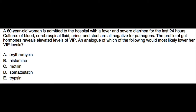Welcome. In this question, there is a 60-year-old woman admitted to the hospital with fever and severe diarrhea for the last 24 hours. Cultures of blood, cerebrospinal fluid, urine, and stool are all negative for pathogens. The profile of gut hormones reveals elevated levels of VIP, that is, vasoactive intestinal peptide. An analog of which of the following would most likely lower her VIP levels?